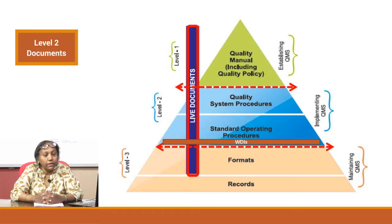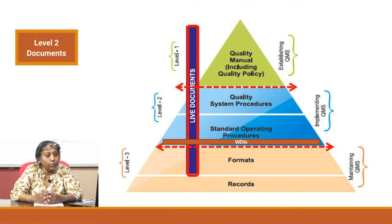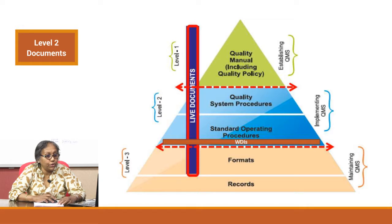Hello again. In the earlier videos, we talked about the policy documents: the quality policy, quality objective, quality indicators, and writing of the quality manual. I hope all those things are clear in your minds now, so that we can move on to the next level of documents, which is the second level — the procedure documents.